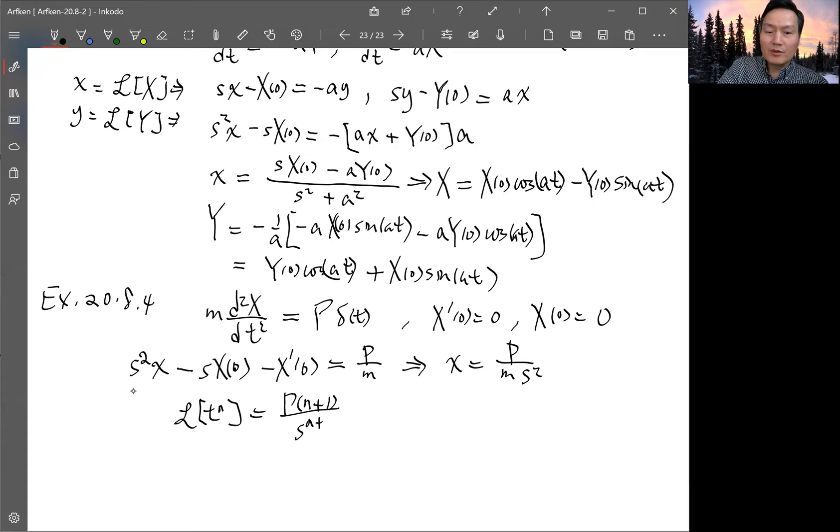So now your S² n is 1. And so gamma 1 plus 1 is just gamma 2. Gamma 2 is just 1. So you get that 1 over S², the inverse transform is just t.